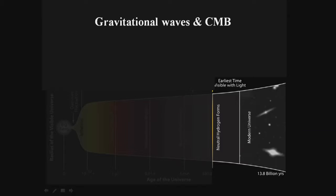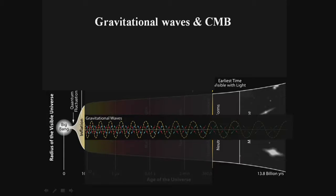You don't see any of that epoch except through a messenger that interacts very weakly with all that hot dense medium — which is gravitational waves. Gravity is so weak compared to other forces. So in principle, by using gravitational waves you can study the beginning of everything, and that beginning has this interesting feature of rapid expansion known as the inflationary period.